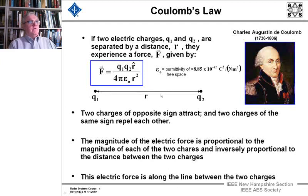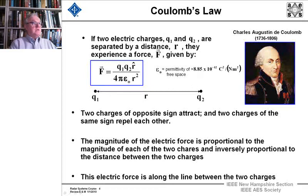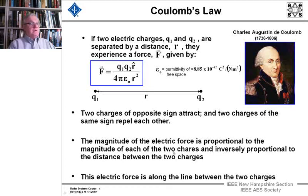Now we move on to the first of the laws, Coulomb's Law, which states that if two electric charges Q1 and Q2 are separated by a distance r, then they experience a force. That force is a vector along the direction between the two charges, divided by epsilon zero — the permittivity of free space, 8.85 times 10 to the minus 12 in these units — and divided by r squared. Two charges of opposite sign attract, and two charges of the same sign repel each other. The magnitude of the electric force is proportional to the magnitude of the two charges and inversely proportional to the distance squared between them.